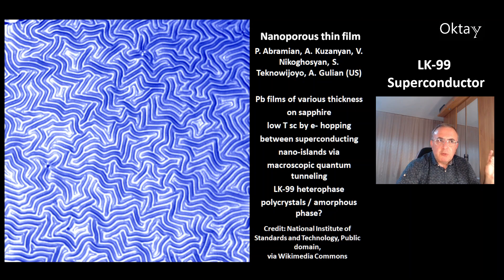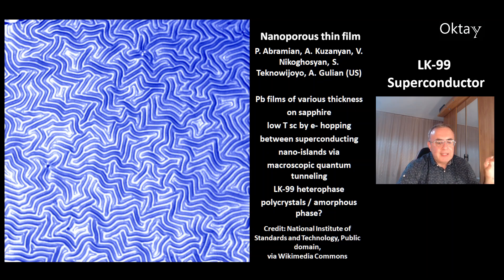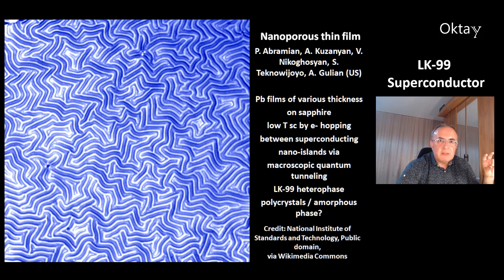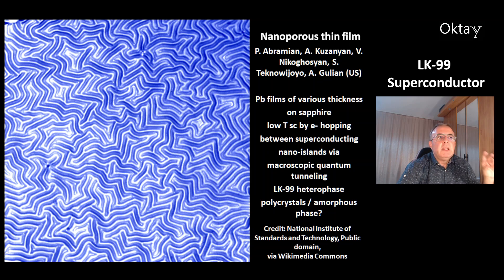This is a picture of a nano-porous thin film. There is another work from Abramian, Kuzanian, Nikogoshian, Tecnoviodo, Yoyo, and Gullian from the USA. They produced thin films of various thicknesses on sapphire, and showed that there is low-temperature superconductivity caused by electron hopping between superconducting nano-islands via macroscopic quantum tunneling. According to their work, they think that LK99 is a heterophase of polycrystals and an amorphous phase.